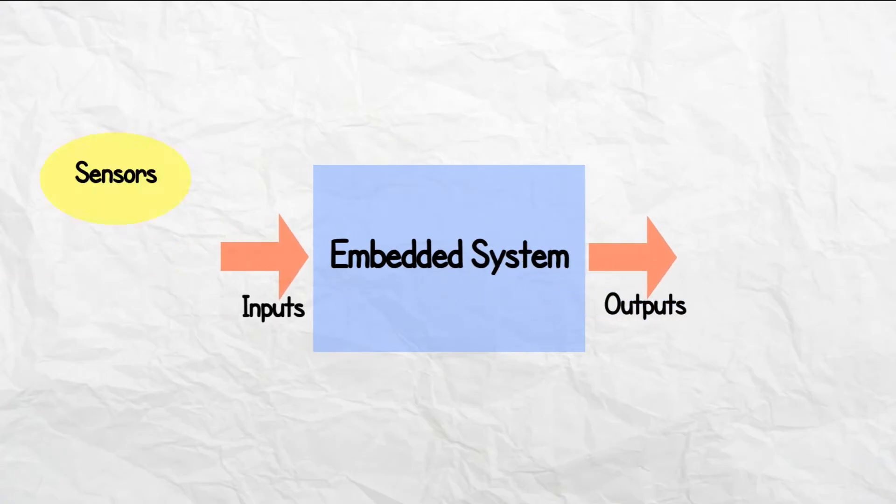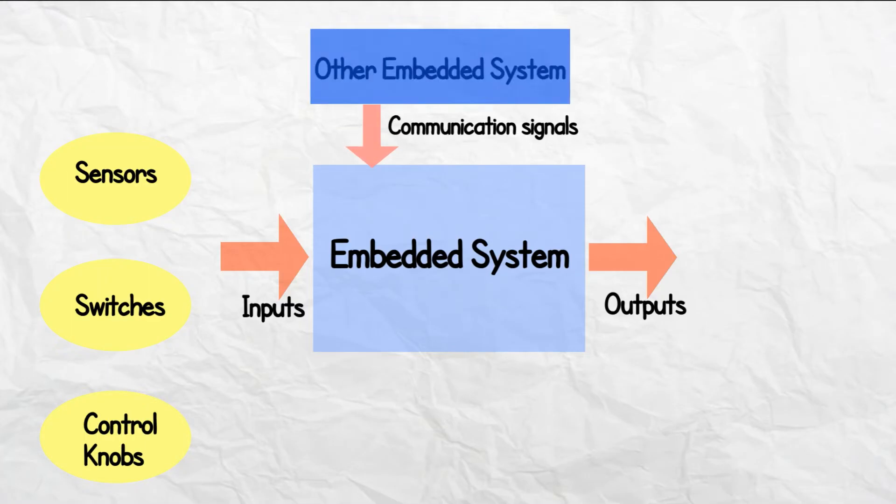Inputs may be sensors, buttons, control knobs, and communication signals from other embedded systems or controllers. Sensors include temperature, pressure, flow, speed, light, vibration sensors, and more.